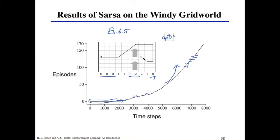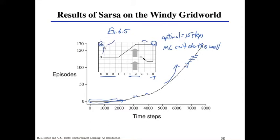The optimal shortest path is 15 steps if you can get it right. Monte Carlo is really problematic here and often fails — because if Monte Carlo ever finds a situation where it's stuck in a corner it can't escape, it'll just stay there forever in the next episode. It won't try going somewhere else because it's only minimizing error between previous experiences, whereas the TD method will always try to update along the way.